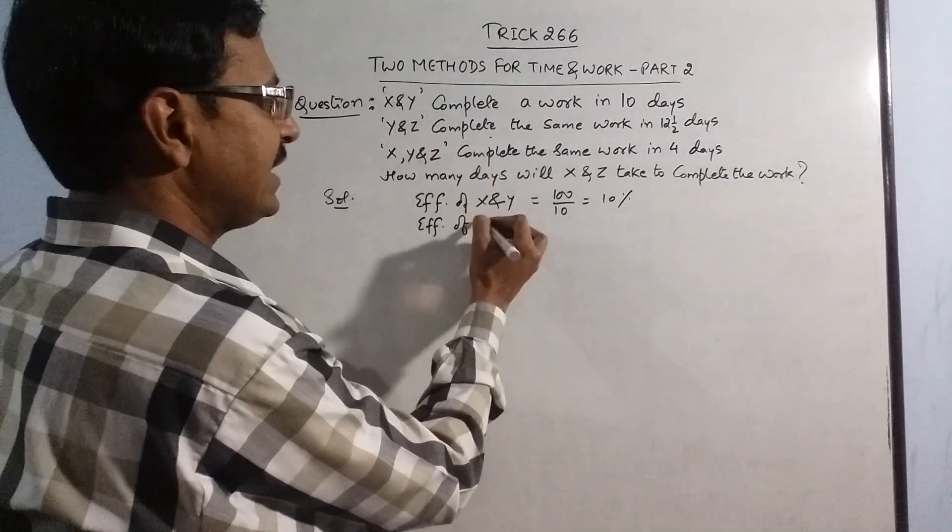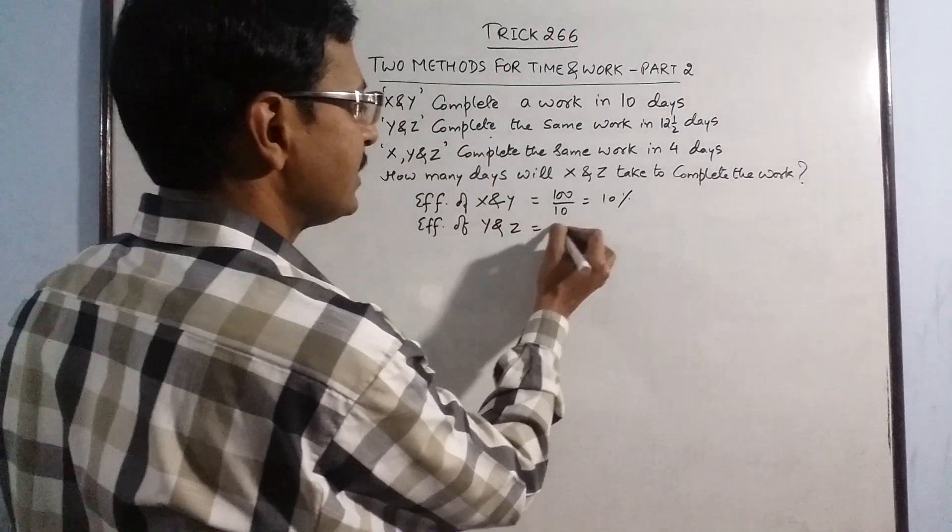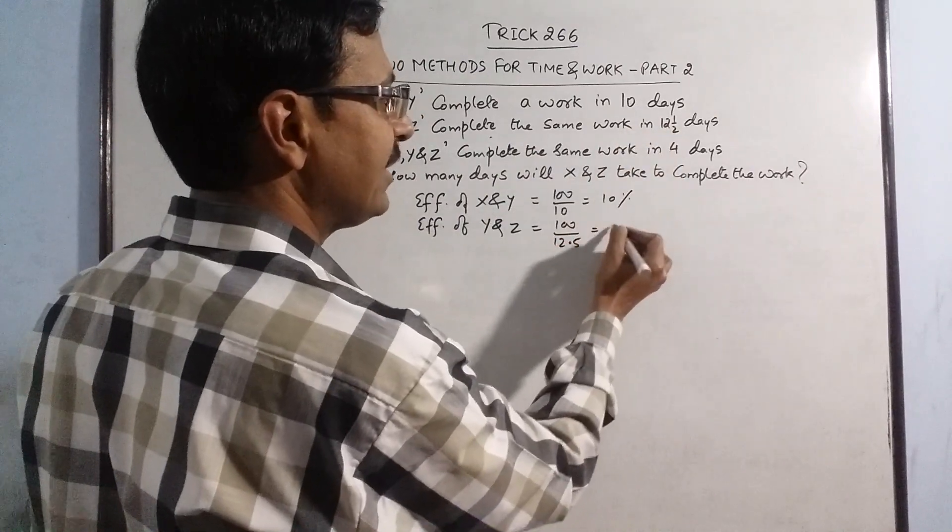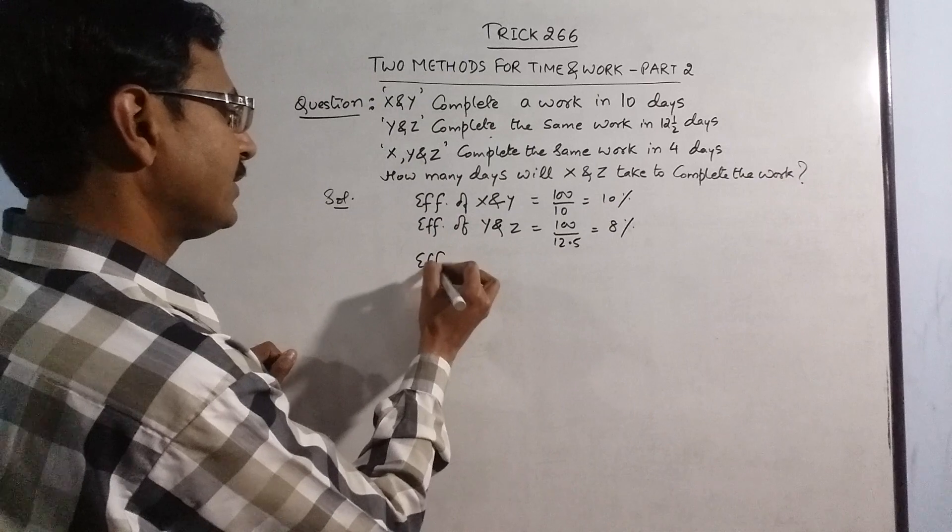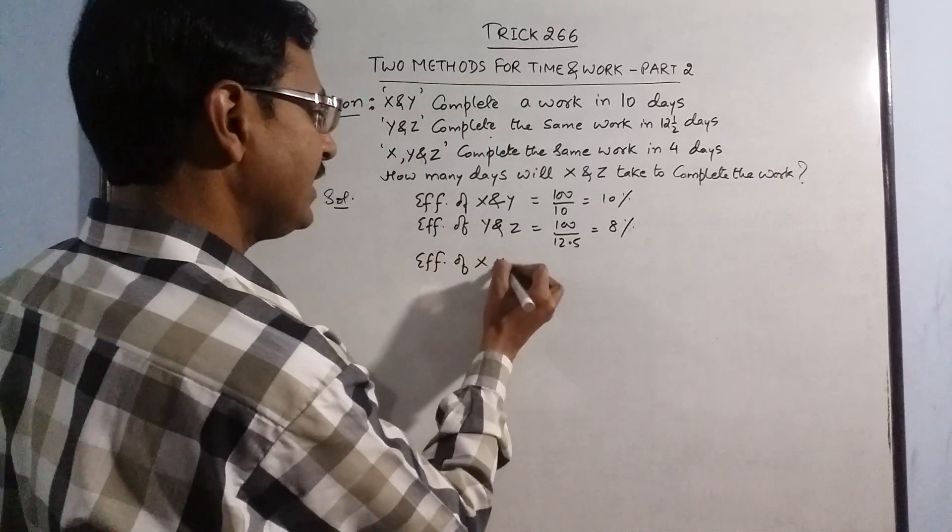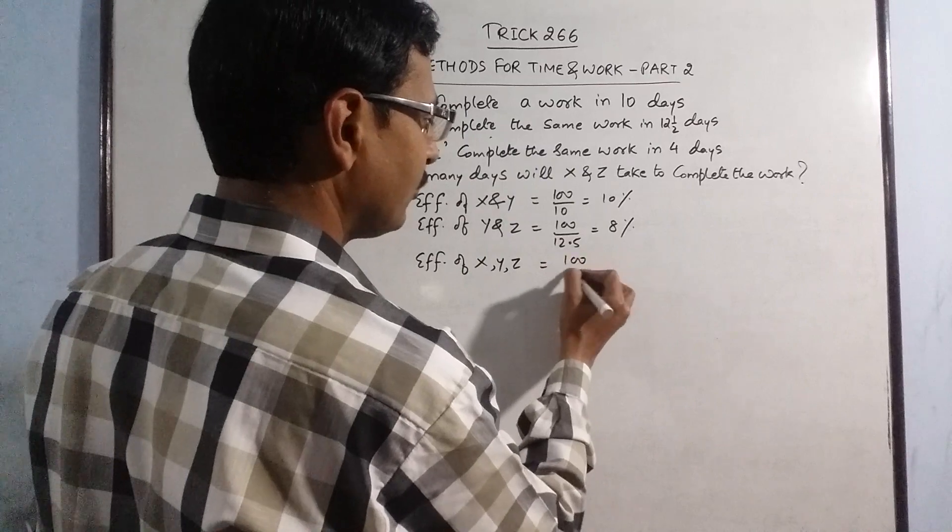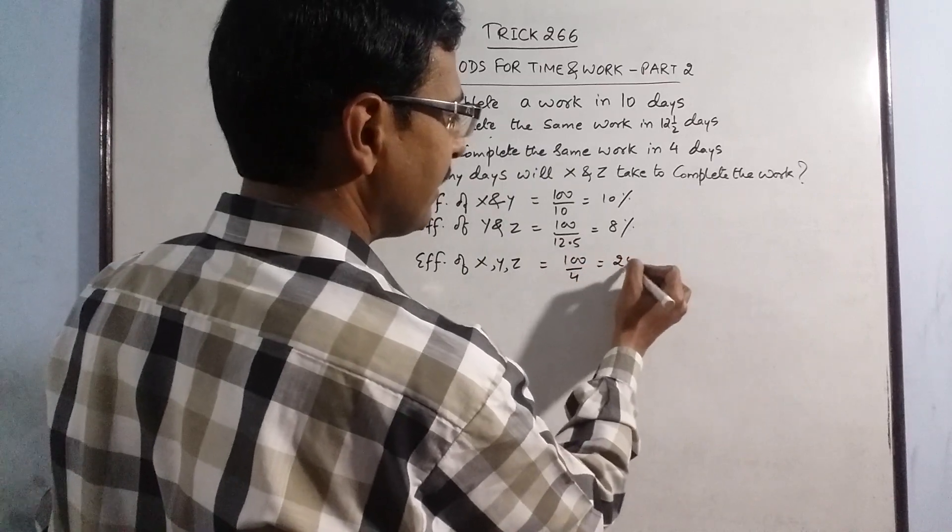Efficiency of y and z, see 100 upon this is 12 and half, 12.5 which is exactly 8. Efficiency of x, y, z all three, four days, so 100 upon 4 that is 25 percent.